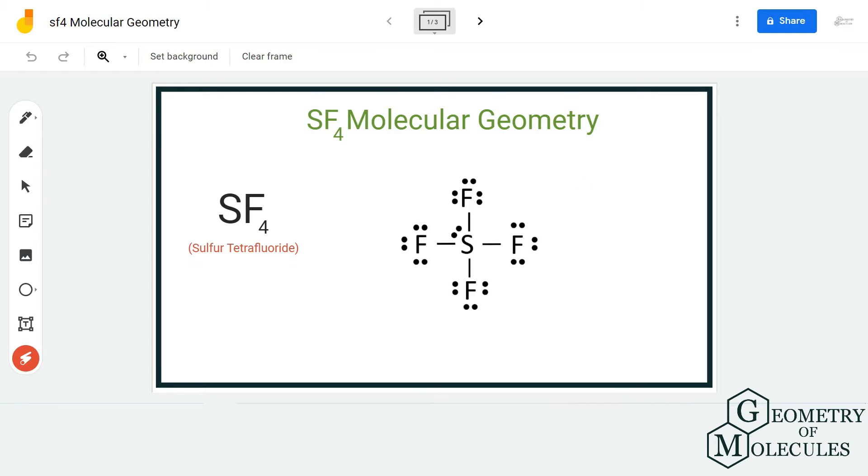If you look at the Lewis structure of SF₄, the sulfur atom is in the center and it is forming bonds with four fluorine atoms.